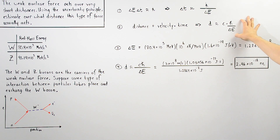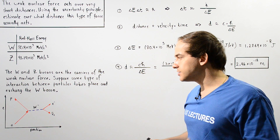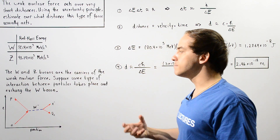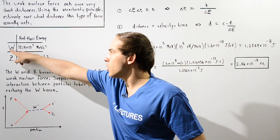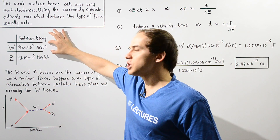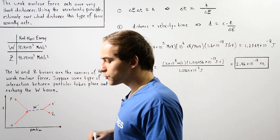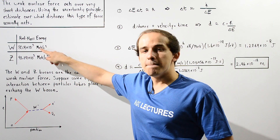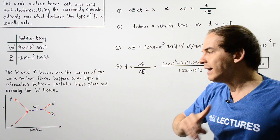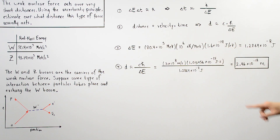The amount of energy not conserved over this time interval, ΔE, is simply the rest mass energy needed to create the virtual W negative gauge boson. We convert its rest mass energy from mega electron volts to joules: multiply by 10⁶ eV per MeV, then by 1.6 × 10⁻¹⁹ joules per electron volt, giving us the energy value in joules.